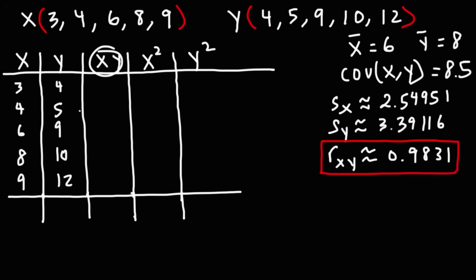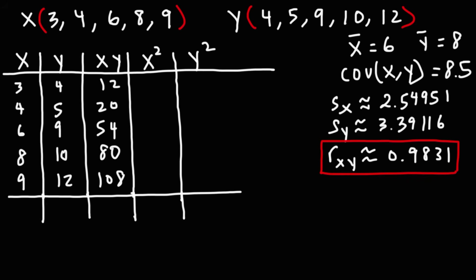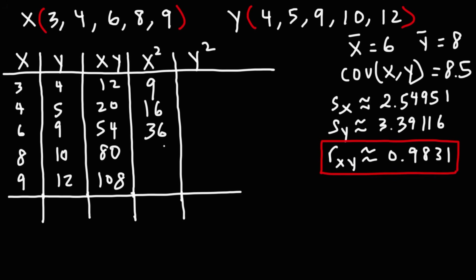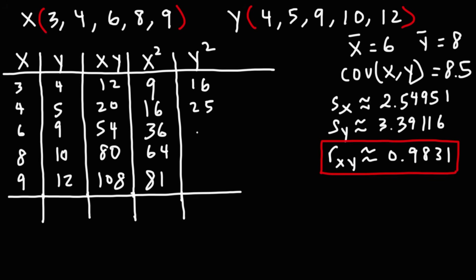The xy products are: 3 times 4 is 12, 4 times 5 is 20, 6 times 9 is 54, 8 times 10 is 80, and 9 times 12 is 108. The x squared values are 9, 16, 36, 64, and 81. The y squared values are 16, 25, 81, 100, and 144.